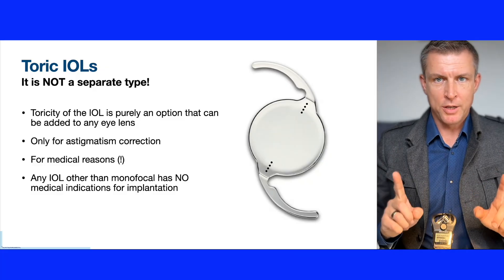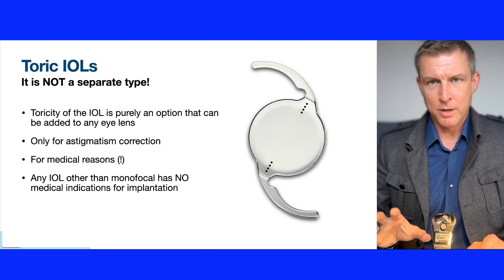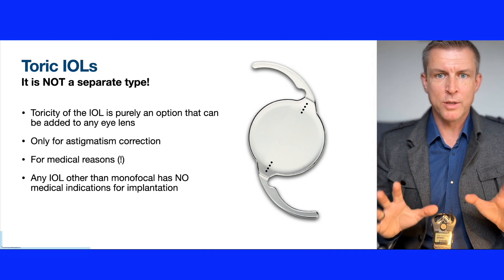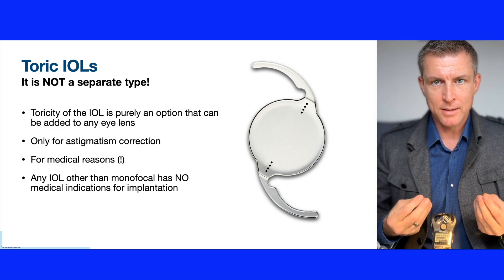I'm planning a next video about blended implantation as well. If you're interested, please subscribe to my channel, switch on notifications, and give me a thumbs up to support my work here on YouTube. Now let's talk about astigmatism correction and toric IOLs. Toricity of an IOL, or the toric component, is a medical option needed to correct pre-existing astigmatism in a patient's eyes.